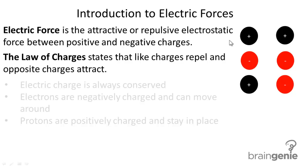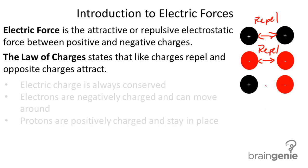Let's take a look at this in a little bit deeper detail. We have like charges here. These like charges would push each other away and repel since they're both positive. Likewise with the two negative charges, they are also like charges, so they would also push each other away and repel. Finally, we have opposite charges here — a positive and a negative — and they would attract each other because they are opposites.